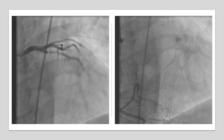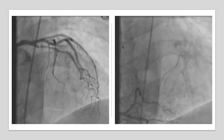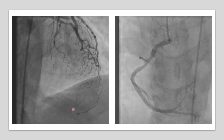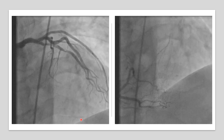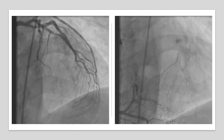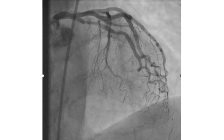Also, in the antegrade injection, there is some visualization near the apex. So this is the course of the LAD starting here with subtotal occlusion — this is the proximal LAD — and it ends up with a large diagonal. But the actual course of the LAD is here.